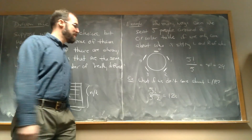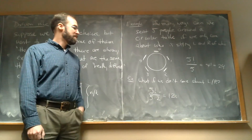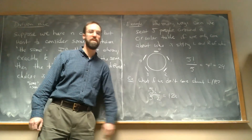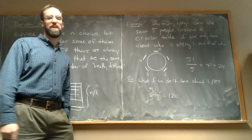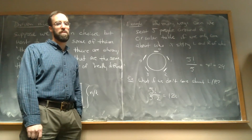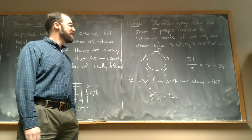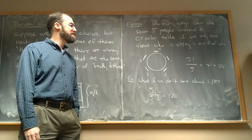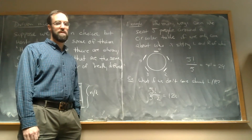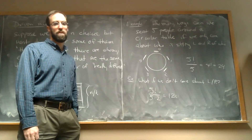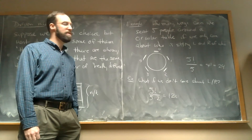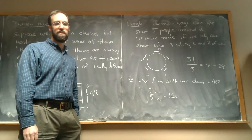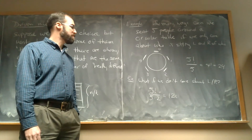It's a nice exercise to write these out — what are the 12 ways of seating people around the table if you don't care about exactly what seat they're in and you don't care about left and right, just who's sitting next to whom? You should convince yourself that there really are 12 of those.